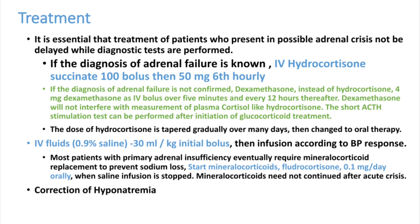The treatment for acute adrenal failure is steroid replacement therapy. The most important drug is hydrocortisone, as it has both mineralocorticoid and glucocorticoid activity, helping with water retention and blood pressure. The dose is 100 mg IV bolus, then 50 mg every six hours — or alternatively 200 mg as a continuous infusion over 24 hours; both have similar clinical efficacy. Dexamethasone can be used if you need to measure ACTH levels for diagnosis, but hydrocortisone is the best drug in the emergency room.